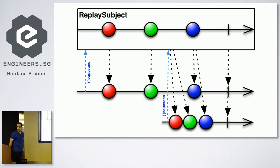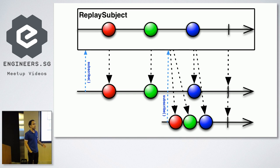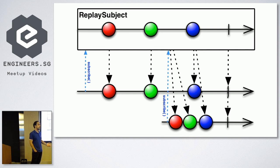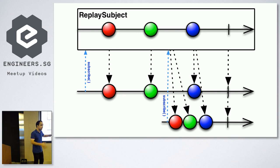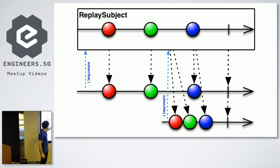The ReplaySubject: sometimes you are interested in getting all previously emitted events. I personally haven't used ReplaySubject much — most of the time you'll deal with PublishSubject or BehaviorSubject. But based on your situation, when you subscribe to a ReplaySubject you will get all the emitted events from the past. So if you subscribe at a certain point, you will get red, green, and blue — all previously emitted events.